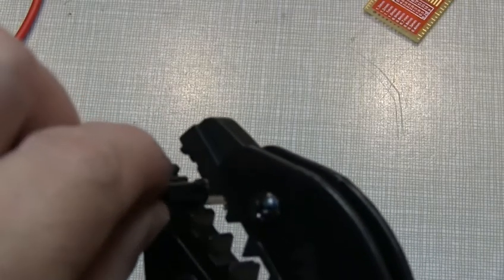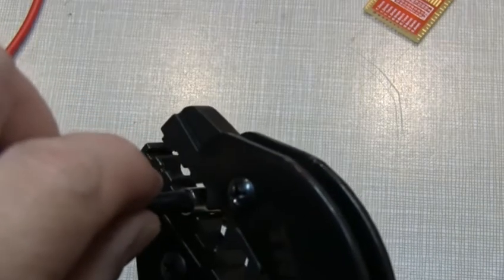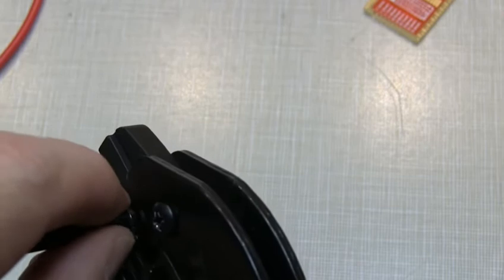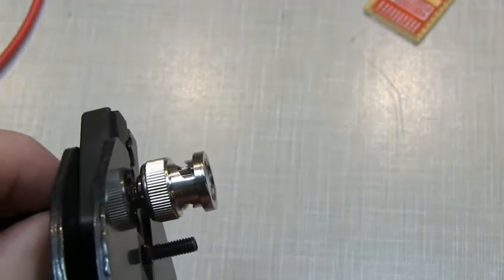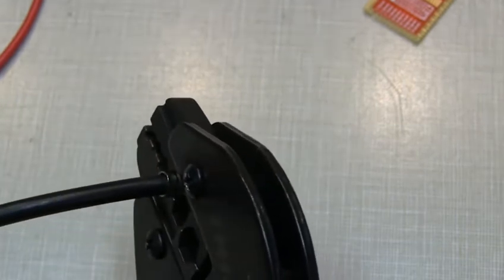Now this one's a little bit easier here. You stick this in the correct ferrule here, and I like to not quite bottom it out but leave myself a little bit of a gap on both sides here, and then we'll crimp that down.